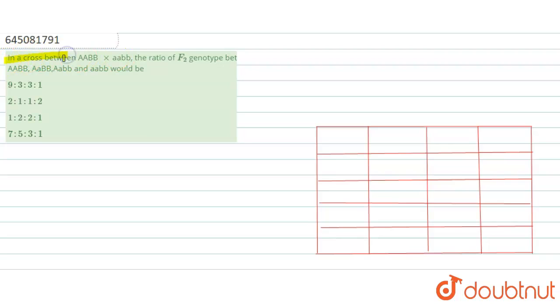Here is the question: In a cross of AABB × aabb, the ratio of pseudo-genotypes AABB : AaBB : Aabb : aabb would be — option 1: 9:3:3:1, option 2: 2:1:1:2, option 3: 1:2:2:1, and option 4: 7:5:3:1.